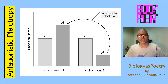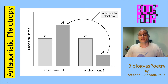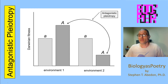Pleiotropy can be thought of as one genotype, multiple phenotypes. In an antagonistic pleiotropy, you have one genotype and multiple phenotypes, but those multiple phenotypes are seen in different environments. Not only that, but those multiple phenotypes are antagonistic to each other in the sense that in one environment, the phenotype will display a high fitness or functionality, whereas in another environment, the phenotype will display a low fitness or functionality.